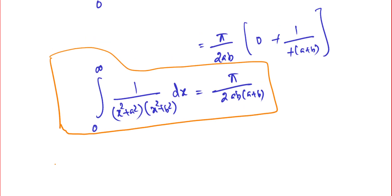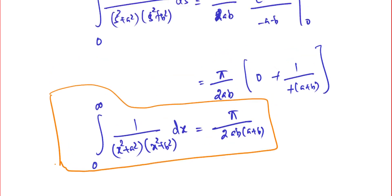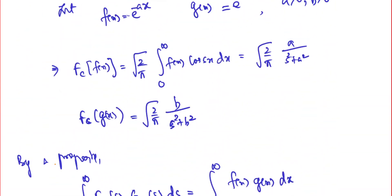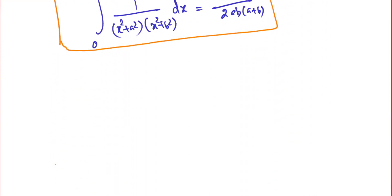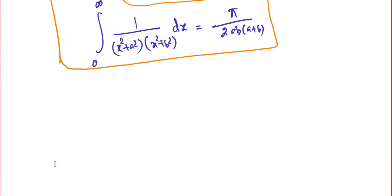What we have done here is use a clever technique: to find the integral of f times g, it is enough to find the integration via the Fourier cosine transforms of f and g. Directly integrating the original expression is difficult, but finding the corresponding functions whose Fourier transforms give the desired product is much easier. That's the core idea. Solve similar problems using this approach — thank you for listening and see you in another video.